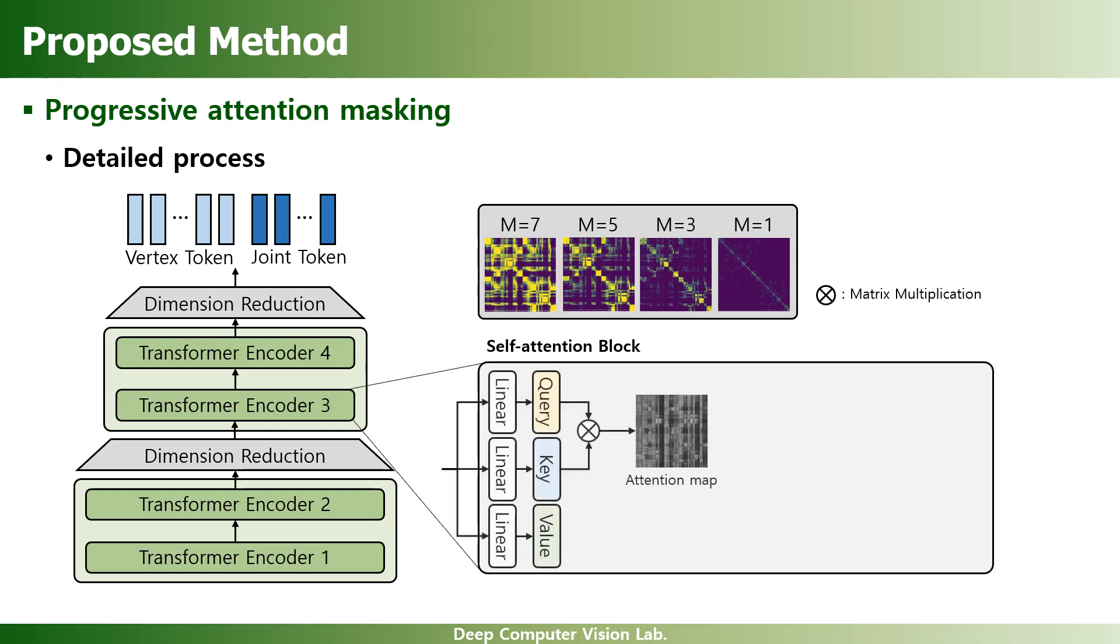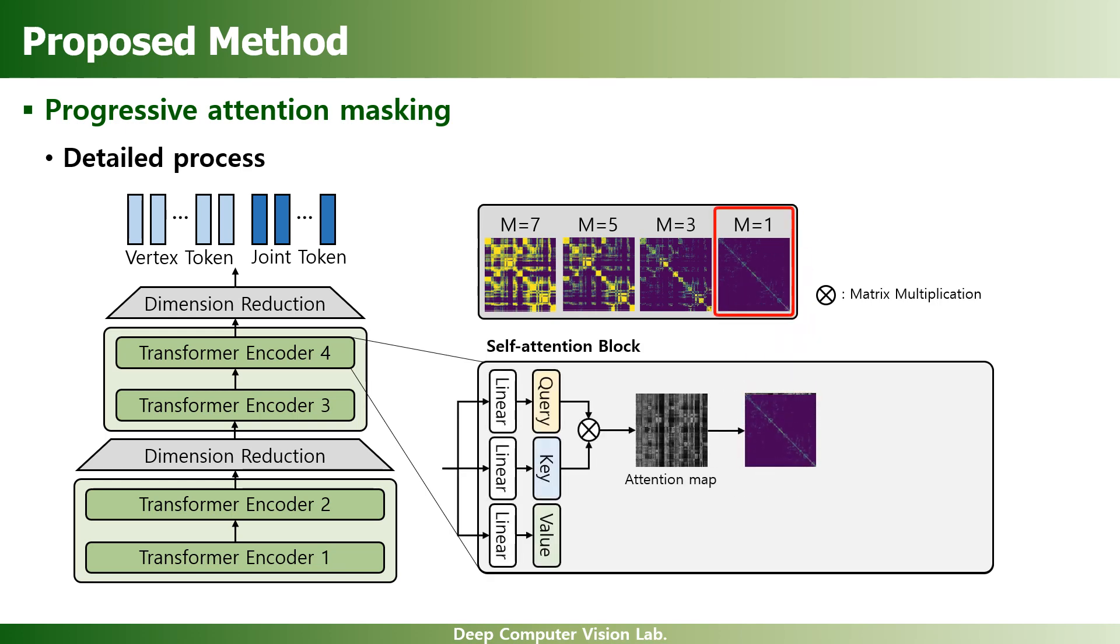By doing this, the human mesh can be accurately regressed even under complicated environments such as occlusions, by considering the relationship between vertices in multiple levels.